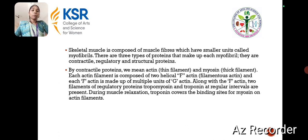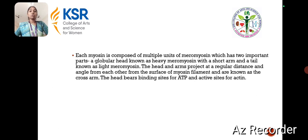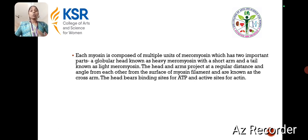There are three types of proteins that make up the myofibrils: contractile, regulatory, and structural proteins. The contractile proteins are composed of actin and myosin — actin is a thin filament and myosin is a thick filament. F-actin is made up of multiple units of G-actin. Along with F-actin, two filaments of regulatory proteins — tropomyosin and troponin — are present at regular intervals. During muscle relaxation, troponin covers the binding sites for myosin on the actin filaments. Each myosin is composed of multiple units of meromyosin, which has two important parts: the globular head, known as heavy meromyosin, with a short arm, and a tail, known as light meromyosin. The head and arms project at regular angles from the surface of the myosin filament and are known as cross arms. The head bears binding sites for ATP and the active sites for actin.